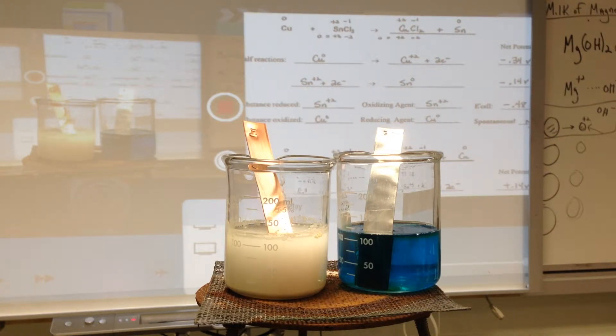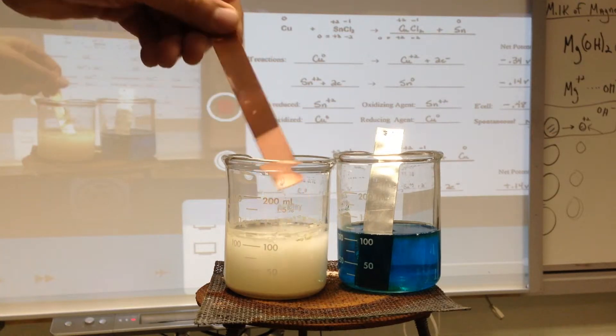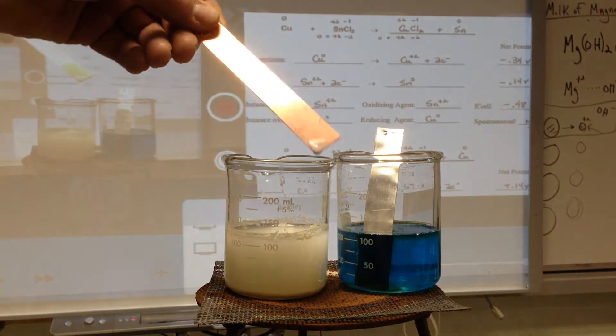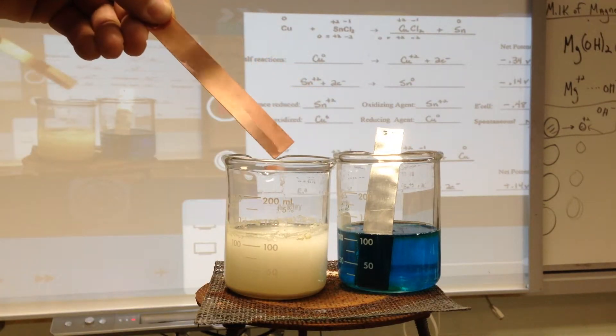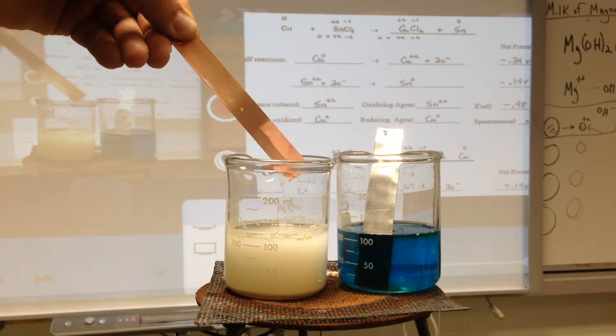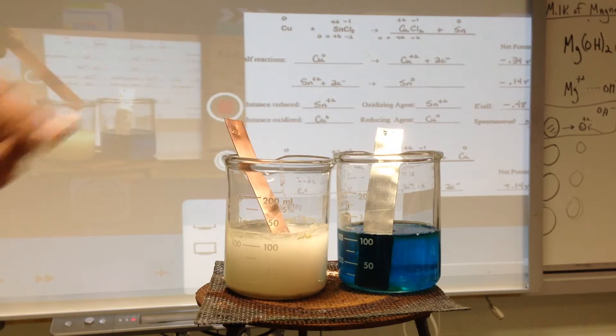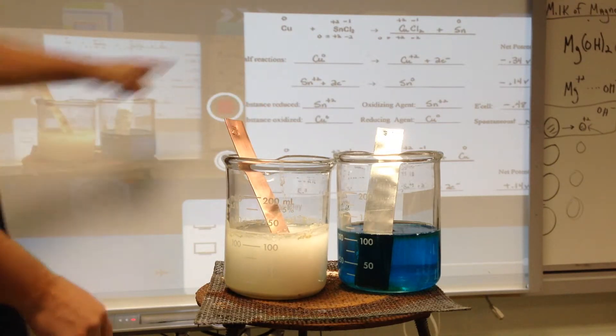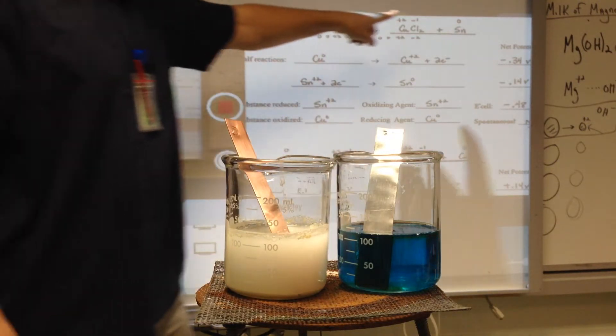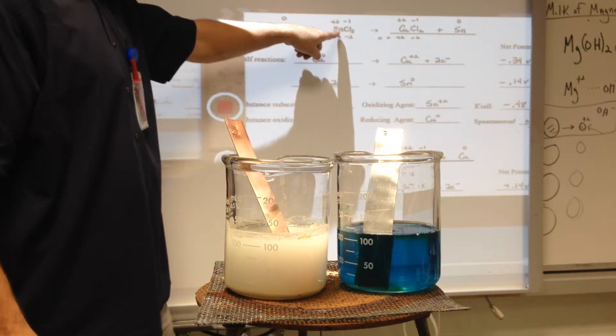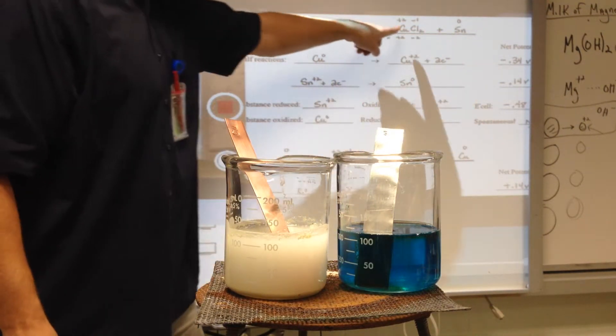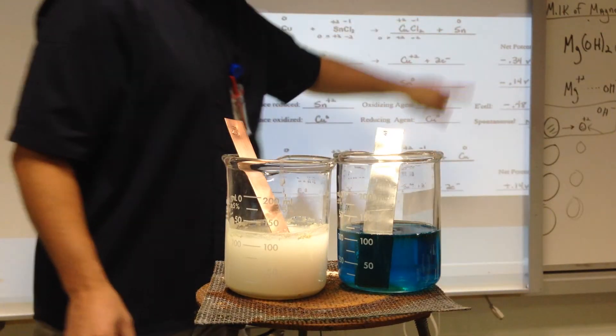There will be no redox reaction here. If I take this out, you'll see that all I have is a milky solution on the copper. There was no redox reaction, because if you look at the half reactions or the overall reaction, you would suspect that the copper would be plated with tin, as we would replace the tin plus two with the copper plus two and kick out the pure tin.